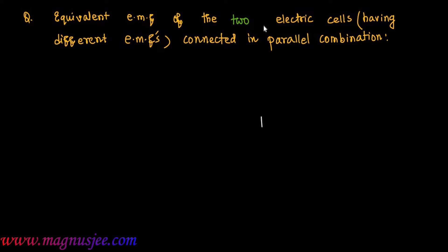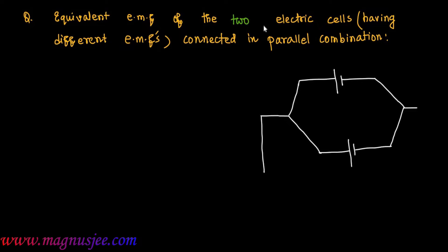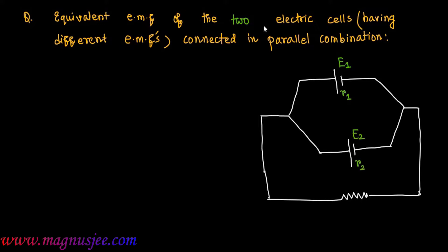Equivalent EMF of two electric cells having different EMFs connected in parallel combination. In the diagram, two electric cells are connected in parallel combination. The EMF E1 and internal resistance R1 belong to the first cell, and E2 and R2 belong to the second cell. These two cells are connected in parallel between points A and B, and external resistance R is connected between points D and C.